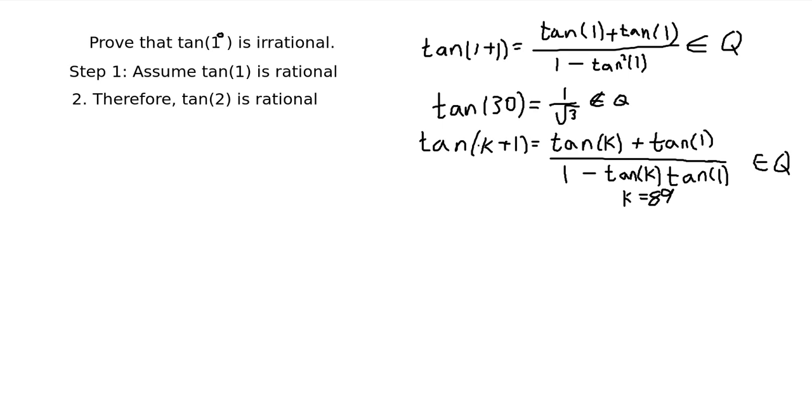So that's the only exception here. But that's because tangent of 90 is not defined. In other words, we can go from tangent of two to tangent of three to tangent of four, right? Because if we assume that tangent of k is rational, then tangent of k plus one is rational.